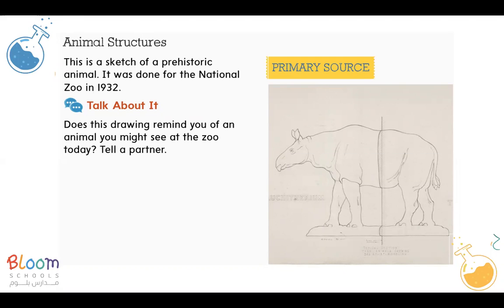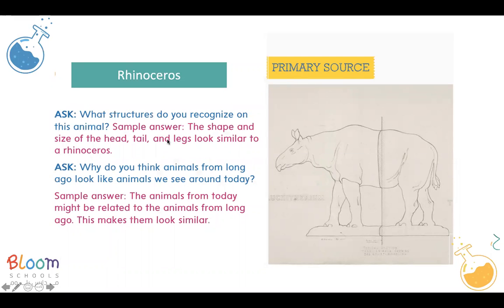Now we talked about animal structures. This is an old prehistoric sketch of an animal done for the National Zoo in 1938. We asked the kids if this drawing reminded them of an animal they might have seen at the zoo. The kids already knew it was a rhinoceros. We asked what structures they could recognize — the shape and size of the head, the tail, the legs. Why do animals from long ago look like animals we see today? The animals from today might be related to animals from long ago, and this makes them look similar.